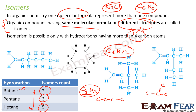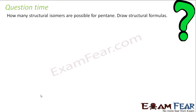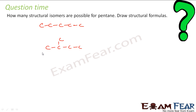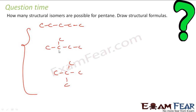Naturally, because you have more carbons, you have more possible options for creating different structures. Now, a practice question: how many structural isomers are possible for pentane? Pentane has five carbons, so you can draw one straight chain, or you can draw it with a branch like this. I think there are three possible structures for pentane.